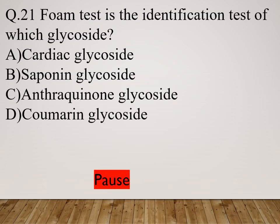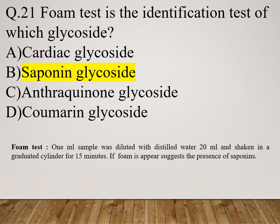Question 21: Foam test is the identification test of which glycoside? Option A: Cardiac glycoside. Option B: Saponin glycoside. Option C: Anthraquinone glycoside. Option D: Coumarin glycoside. The right answer is saponin glycoside. In the foam test, 1 ml sample is diluted with 20 ml distilled water and shaken in a graduated cylinder for 15 minutes. If foam appears, that suggests the presence of saponin.